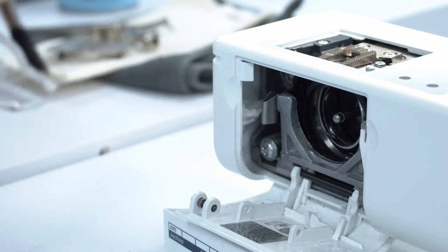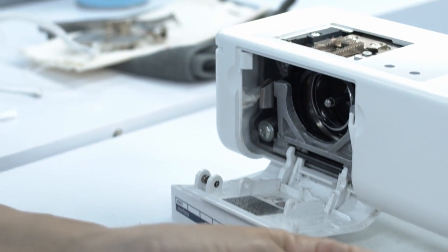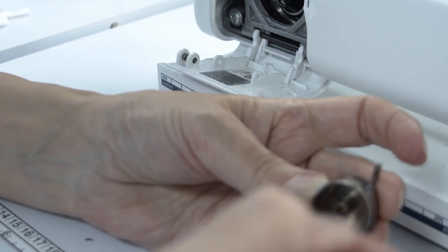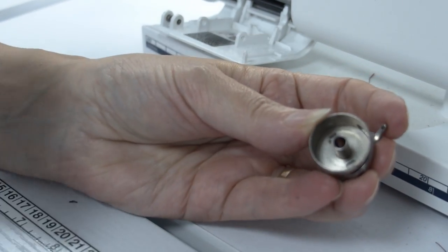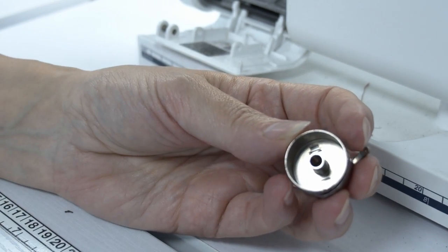Now I'm going to just give my bobbin case—this is a CB bobbin case—a little bit of a dust in case there was any lint in there, and then we're going to re-thread the bobbin.